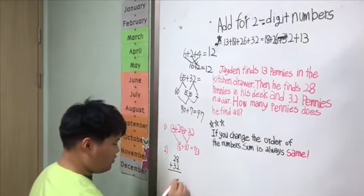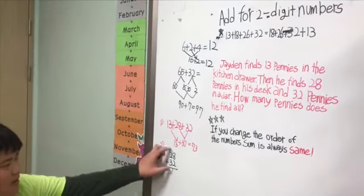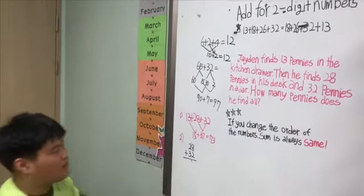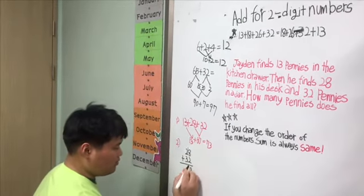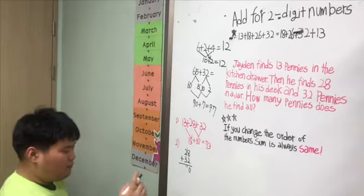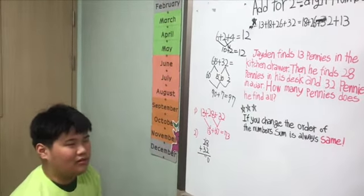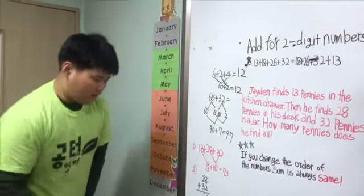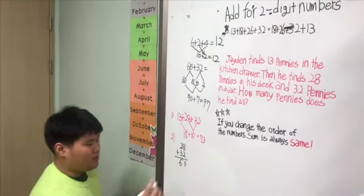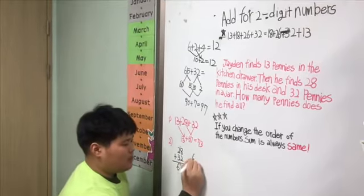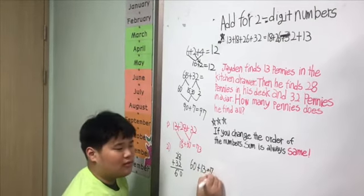And then the second way is you solve these problems using tens and ones. 8 plus 2 is equal to 10. So, 20 plus 30 is equal to 50. So, 10 plus 50 is equal to 60. And then, 60 plus 13 is equal to 73.